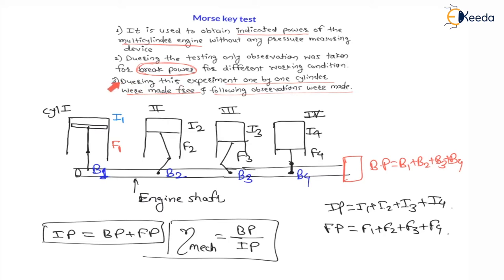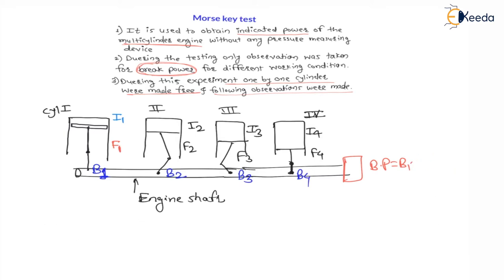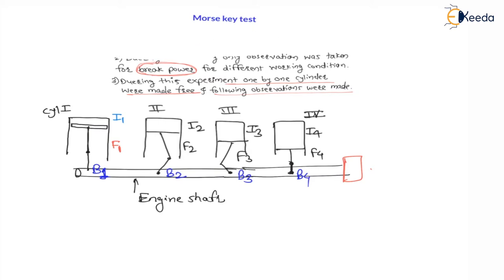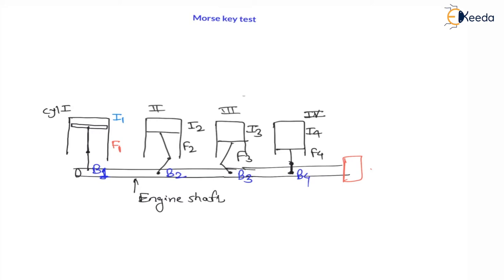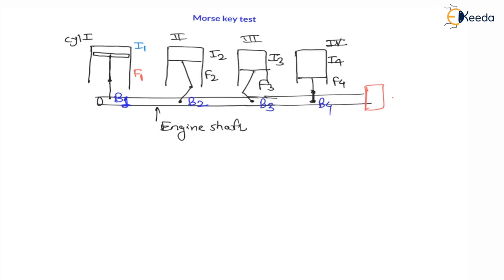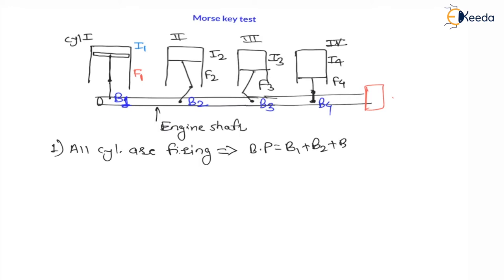Point number 3: during this experiment, one by one cylinders are made free. We have learned that mechanical efficiency is total brake power divided by total indicated power. Now let us look at the observations. Observation 1: all cylinders are firing, meaning all cylinders are producing power. Therefore, total brake power in this case equals B1 + B2 + B3 + B4. This total brake power equals indicated power minus friction power.